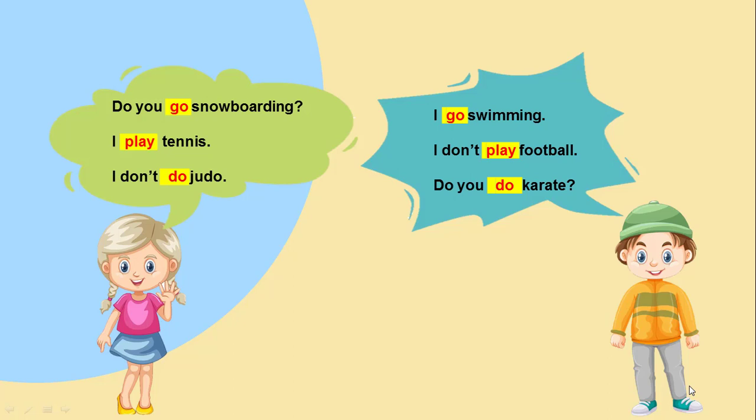Now I'm going to read these sentences and I want you to notice the similarities between them. Do you go snowboarding? I play tennis. I don't do judo. I go swimming. I don't play football. Do you do karate? What do you notice? What do we add after the verbs play, go, and do?